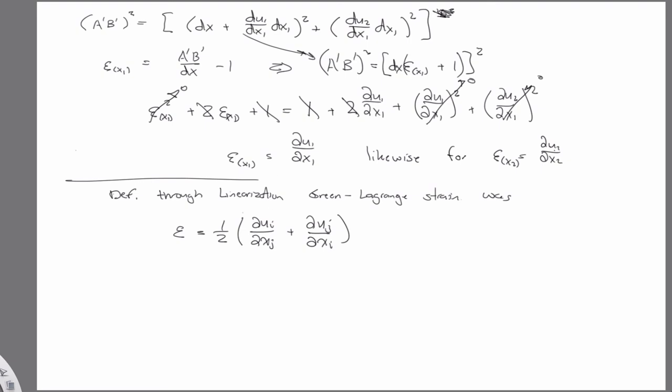So let's evaluate this guy at the indices one-one, so we can make a direct comparison to that. So if you evaluate it at the indices one-one, one-half times partial u1 partial x1 plus partial u1 partial x1.